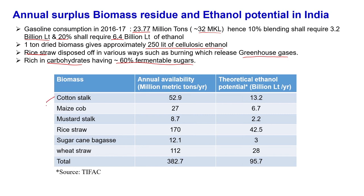I have listed some biomass sources: cotton stalk, maize, mustard stalk, rice straw, sugarcane bagasse, wheat straw. Adding them together in million metric tonnes per year gives an annual availability of approximately 382.7 million metric tonnes per year. The theoretical potential production of ethanol is 13.2 billion litres. Rice straw is close to 35 percent, sugarcane bagasse around 28 of 112 — these are pretty high numbers, so we should focus on wheat straw and rice straw as agricultural residue material.